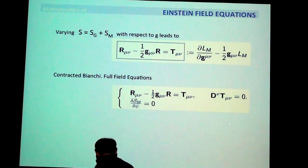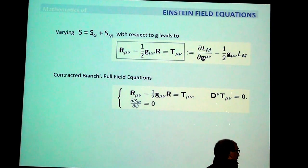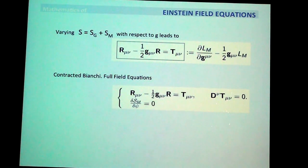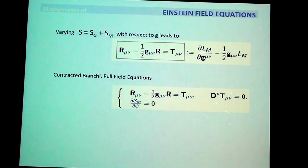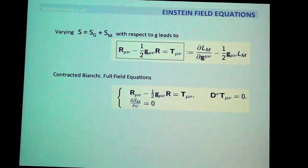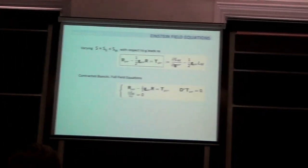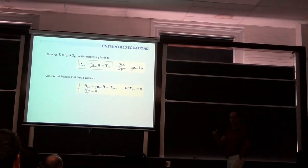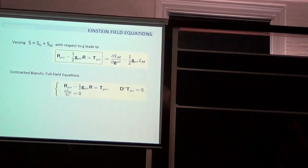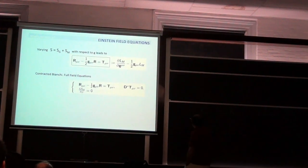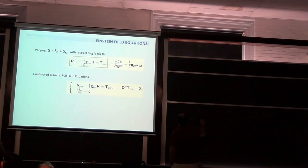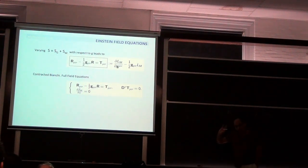The left-hand side is sometimes called the Einstein tensor E-mu-nu, which is R-mu-nu minus one-half g-mu-nu times the scalar curvature. We all know the Bianchi identities, which are identities satisfied by the Riemann curvature tensor. If you contract them twice, you find that the divergence of E — that is, the covariant divergence of E-mu-nu — is identically zero. This is a purely geometric fact.